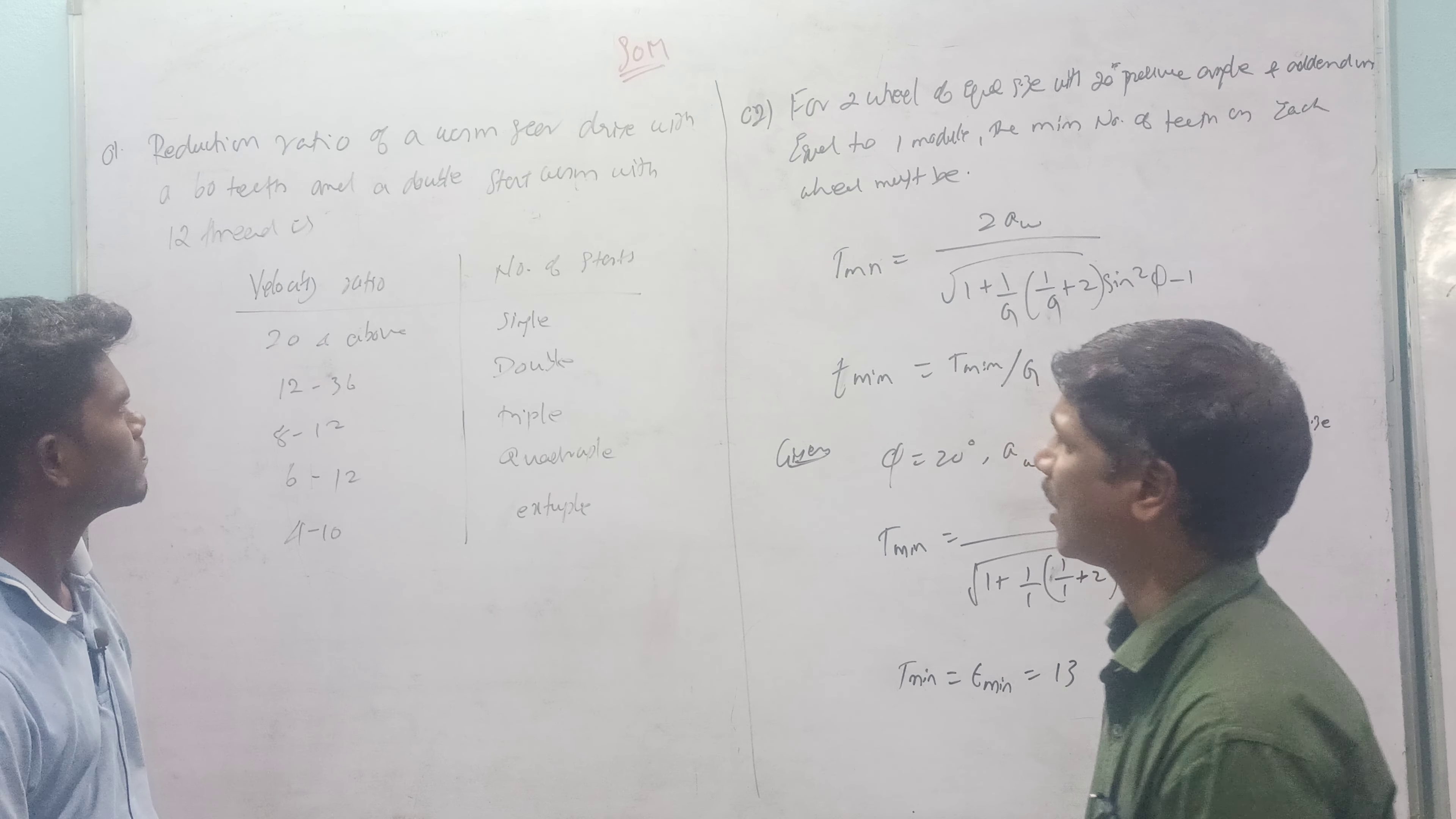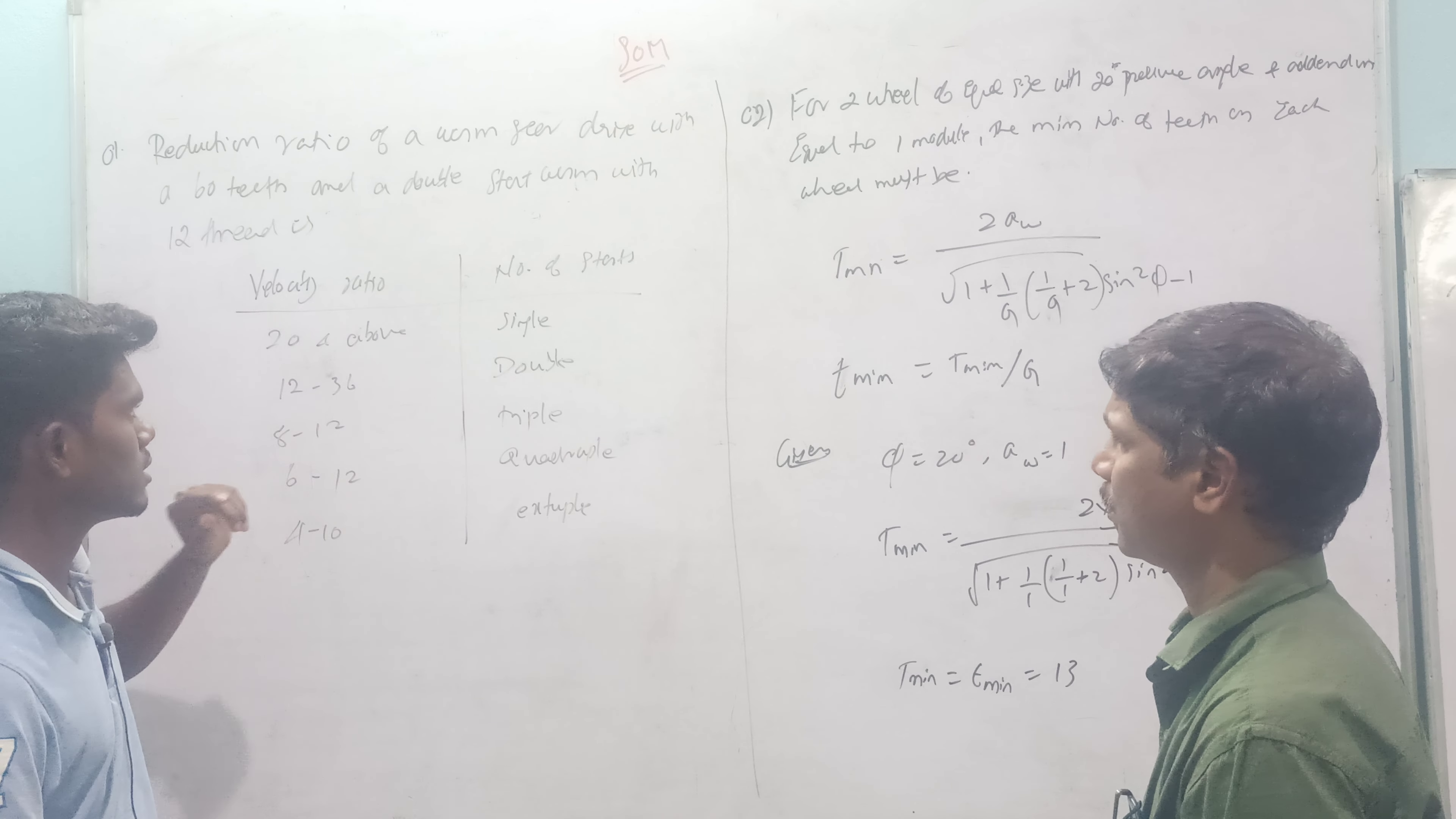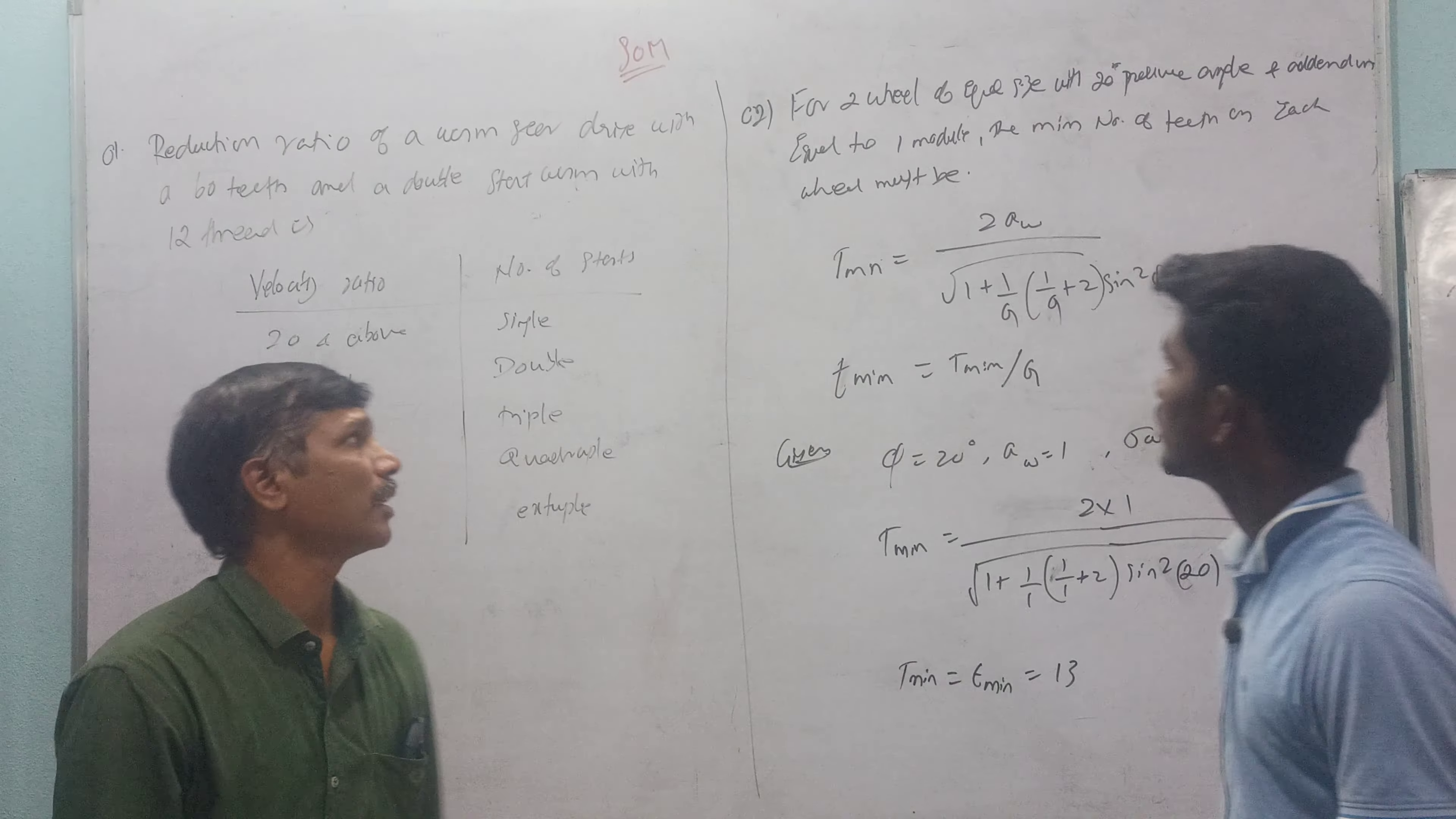First, the velocity ratio is the number of starts. The velocity ratio is 20 and above. The velocity ratio of a single start happens. The velocity ratio is a double start. The velocity ratio of 8 to 12 is triple start. The velocity ratio of 6 to 12 are quadruple starts. The velocity ratio is 4 to 10. First, the velocity ratio is on the number of starts. The two of you will consider that.